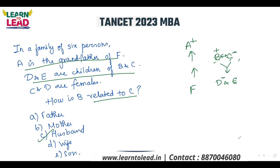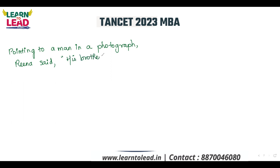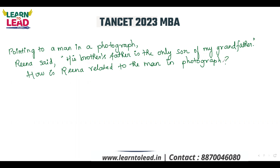Do you understand? Now, next question. Pointing to a man in a photograph, Reena said: 'His brother's father is the only son of my grandfather.' How is Reena related to the man in the photograph? Option A: sister. Option B: mother. Option C: sister.